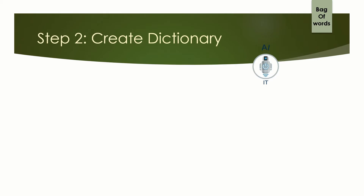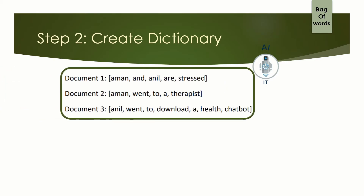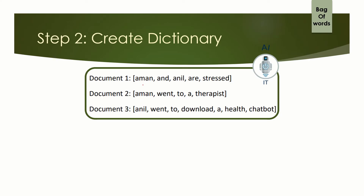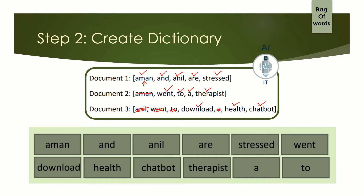We move on to the second step where we create a dictionary of all the unique words in the corpus. Taking the unique words: Aman is occurring for the first time, so it is a unique word. And, Anil, are, stressed — all occurring for the first time. In the second document, Aman has already appeared so we ignore it. Went, to, a, therapist are new. In the third document, Anil, went, to, download, a are repeated. Health and chatbot are new. We are left with unique words: Aman, and, Anil, are, stressed, went, to, a, therapist, download, health, chatbot. We have successfully created a dictionary of unique words.